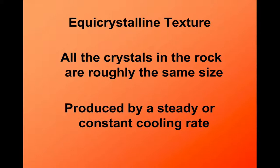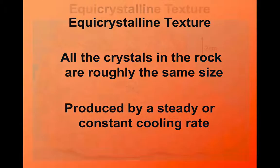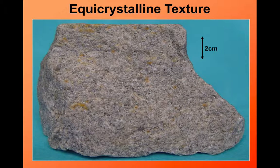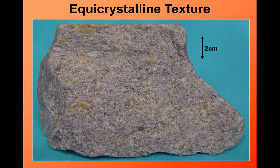If we now look at the whole rock, there are some words we need to get used to using. The first of these is equicrystalline. In an equicrystalline texture, all the crystals in the rock are roughly the same sort of size. We get this as a result of a steady rate of cooling — that could be a slow steady rate, giving a coarse-grained equicrystalline texture, or a fast rate of cooling, which gives a fine-grained equicrystalline texture. In this rock, the crystals are all roughly the same size. It's important to look at the bulk of the rock rather than trying to find one or two crystals that may be slightly different.